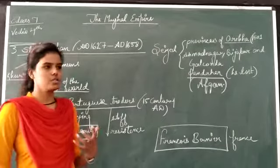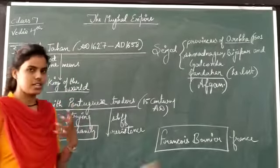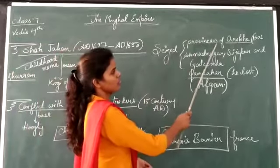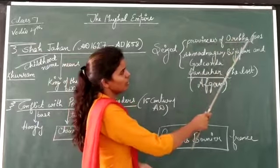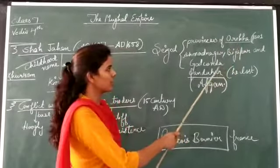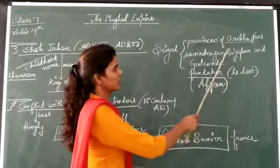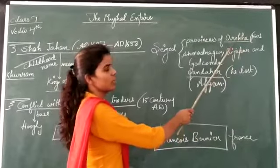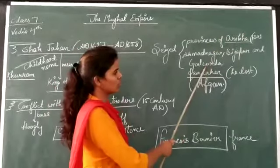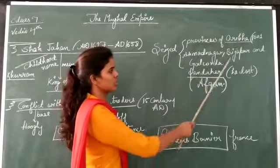Now when we talk about his victories, he extended his empire. Firstly, he saved the province of Orchha, which is in Niwari district in Madhya Pradesh. He also saved Ahmednagar, Bijapur, and Golconda provinces.